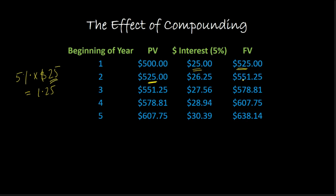This is the idea of compound interest: as we let money sit in for longer periods of time, by the end of the second year we have $551.25, and if we let that sit in for the third year, we'll earn even more interest — interest upon interest upon interest. That is the idea of compound interest.